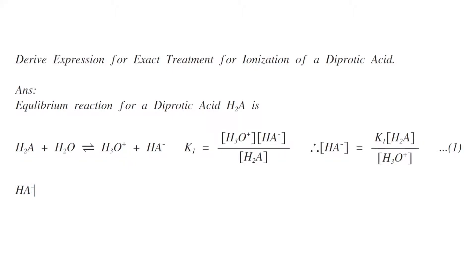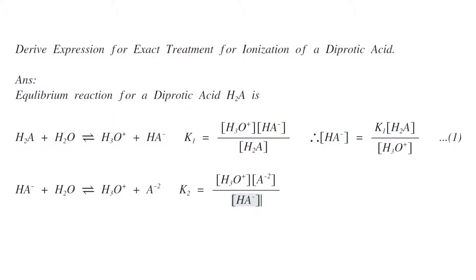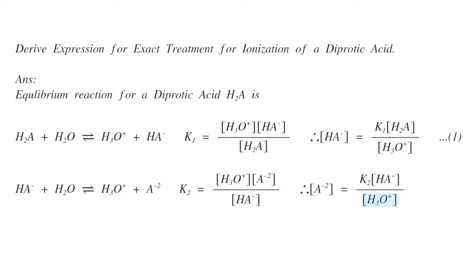Similarly, from the second reaction, K2 equals [H3O⁺][A²⁻] divided by [HA⁻]. Rearranging gives [A²⁻] equals K2 times [HA⁻] divided by [H3O⁺]. This is equation number two.